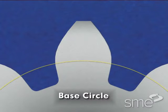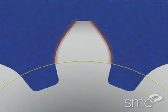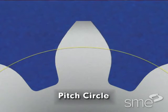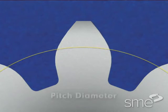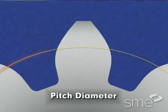The base circle is the gear diameter from which the involute tooth profile is developed. The pitch circle, which is also referred to as the pitch diameter, is the imaginary rolling circle of a gear.